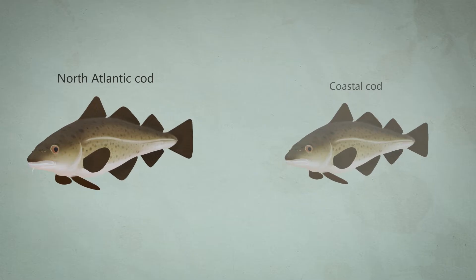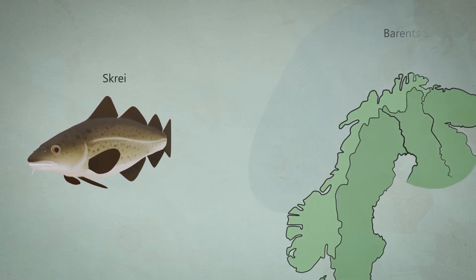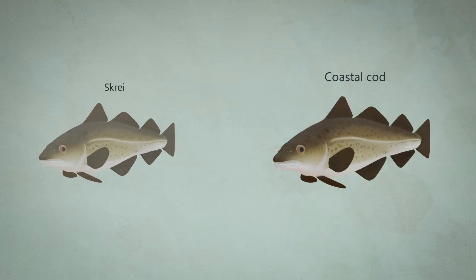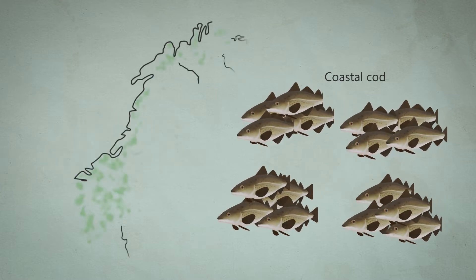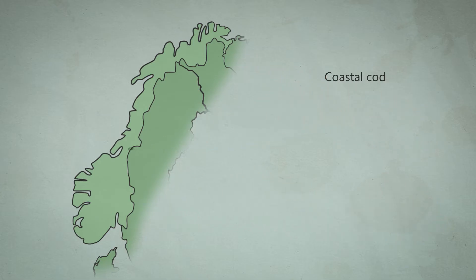North Atlantic cod, often called skrei, has a large distribution area from the Barents Sea to the Møre Coast and consists of large populations. Coastal cod, on the other hand, is divided into many groups which are more or less isolated from each other, each usually in their own fjord.